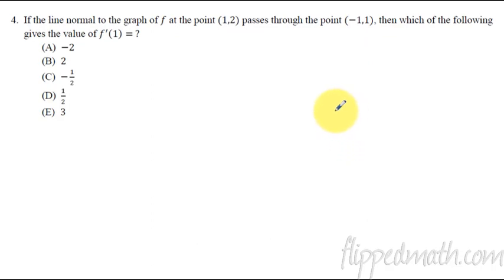Number 4, the line that is normal to the graph of f. So if you remember, normal is when it's perpendicular to the tangent line. That's what a normal line is. We want to have the negative reciprocal of the derivative, because the derivative is the tangent line slope. So a negative reciprocal would give us the normal line slope.